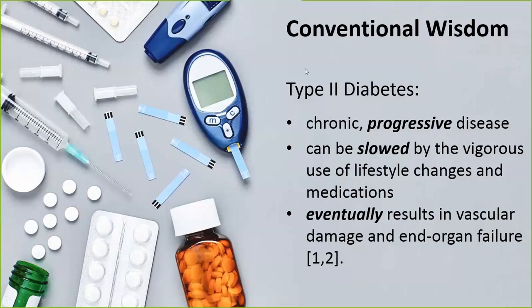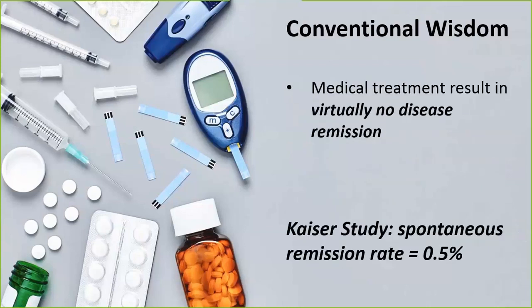Conventional wisdom would tell us that diabetes is a chronic progressive disease. It's something that can be slowed by vigorous use of lifestyle changes and medications, but it eventually involves vascular damage and end organ failure. Medical treatment really doesn't lead to any remission — in fact, the big study in Kaiser, over 75,000 people, showed the spontaneous remission rate was less than 1%. So this didn't look very promising for Don.